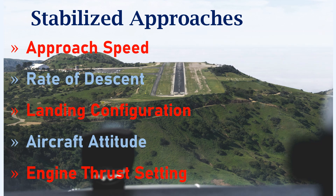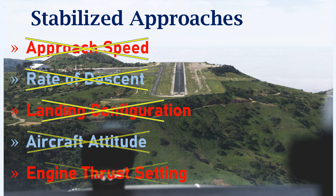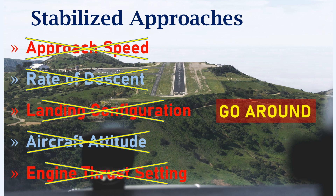During the approach phase, if these conditions are not satisfied, it is always best to perform a go-around and make a new attempt for landing the aircraft. There may be many reasons why the approach becomes an unstabilized approach. Let's take a look at a few of the reasons.